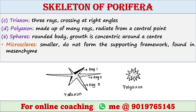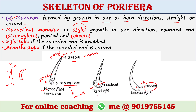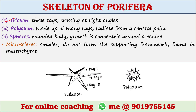Next type is triaxon. Tri means three rays. This type of spicule is made up of three rays which cross at right angles to each other — ray 1, ray 2, and ray 3 — all crossing at approximately right angles.